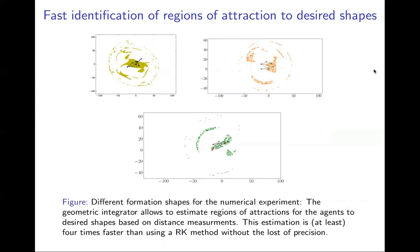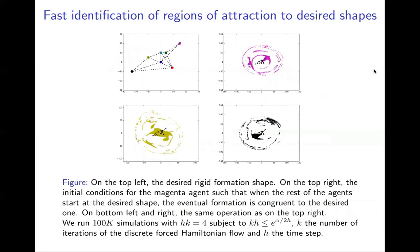To determine whether an eventual shape in a simulation is congruent to the desired one, we check if the discrepancy of distances between agents in their final positions is lower than one percent with respect to the desired shape in the desired configuration.